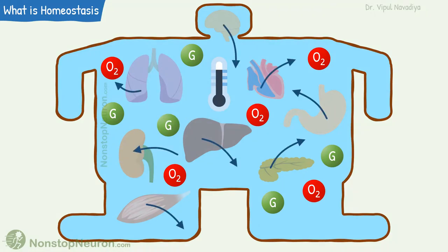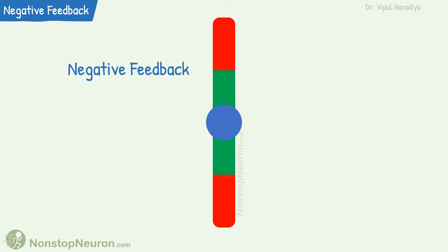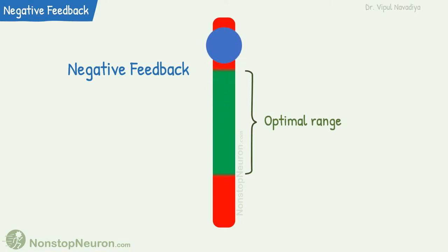In fact, all the cells, tissues, organs, and organ systems contribute to maintaining the internal environment at a constant level. This ongoing process of maintaining the internal environment at a constant level is called homeostasis. The most common mechanism in homeostasis is negative feedback. That is, when any parameter deviates from the optimal range, the control system tries to bring it back to the optimal range.